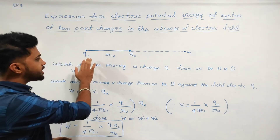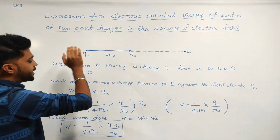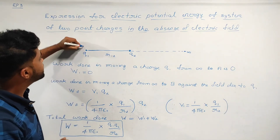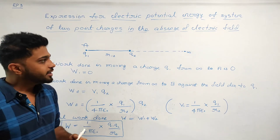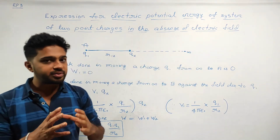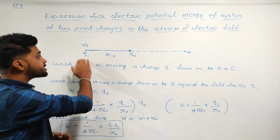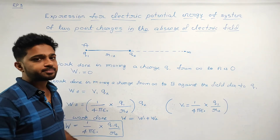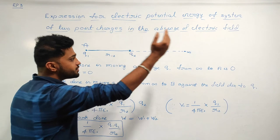Q1 is the charge brought from infinity to point A. Initially, this charge is not in the electric field. The opposing force is at infinity — meaning there is no opposing force initially.